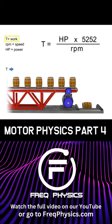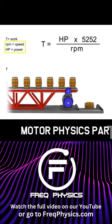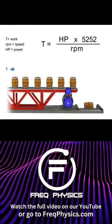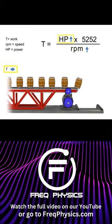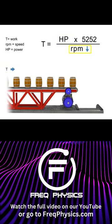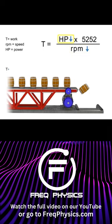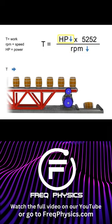If torque remains constant, speed and horsepower are proportional. As the speed or RPM increases, horsepower increases to maintain constant torque. If speed decreases, horsepower decreases to maintain constant torque.